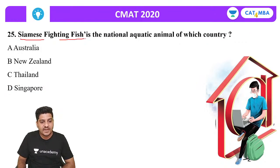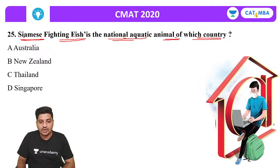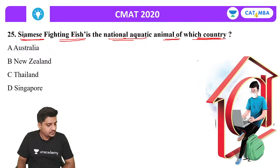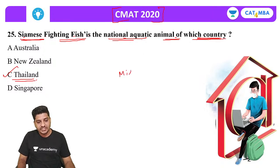Last question of CMAT 2020: The Siamese fighting fish is the national aquatic animal of which country? The correct answer is Thailand. Looking at the CMAT 2020 paper overall, the majority of questions were from miscellaneous GK, superlatives, books and static parts — very few from polity, but several from history and geography.